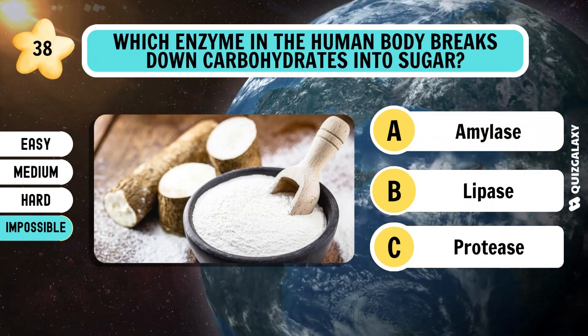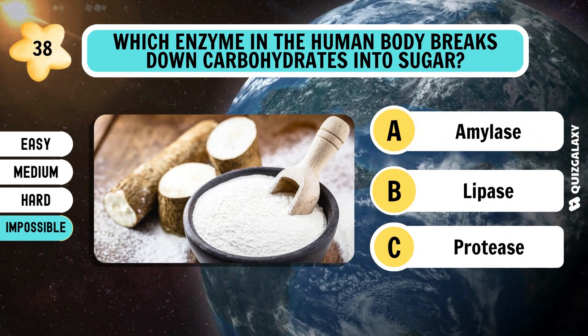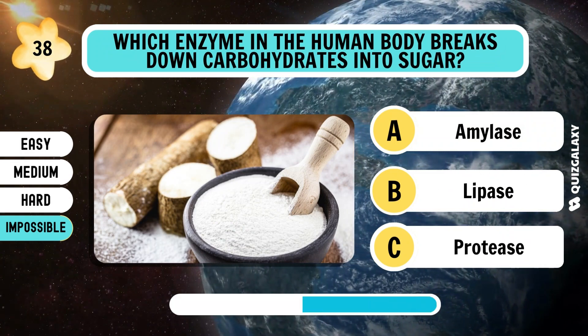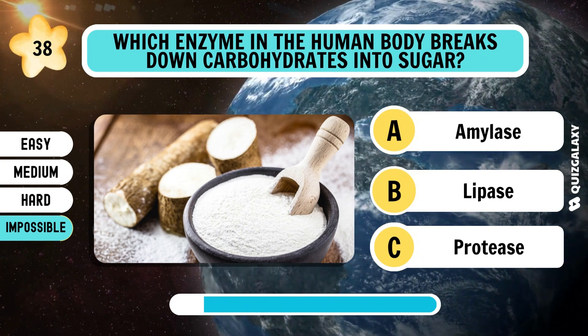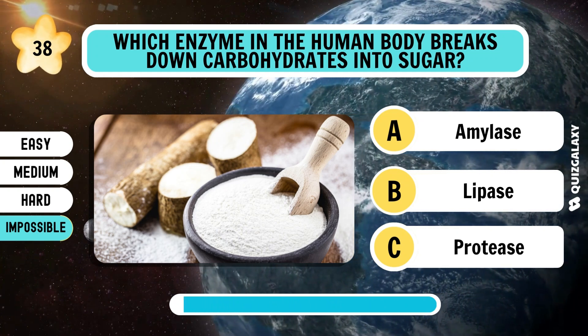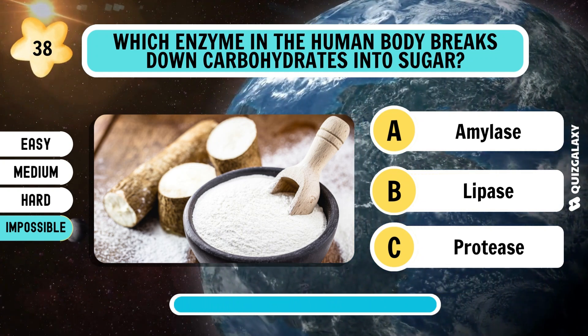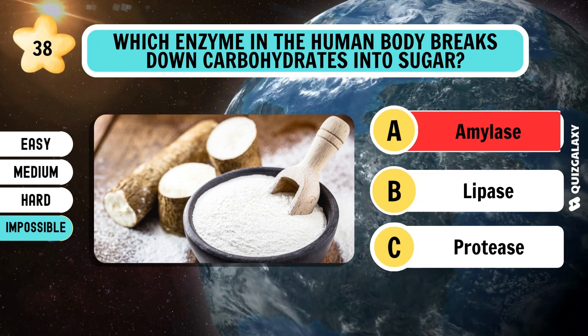Which enzyme in the human body breaks down carbohydrates into sugar? Amylase.